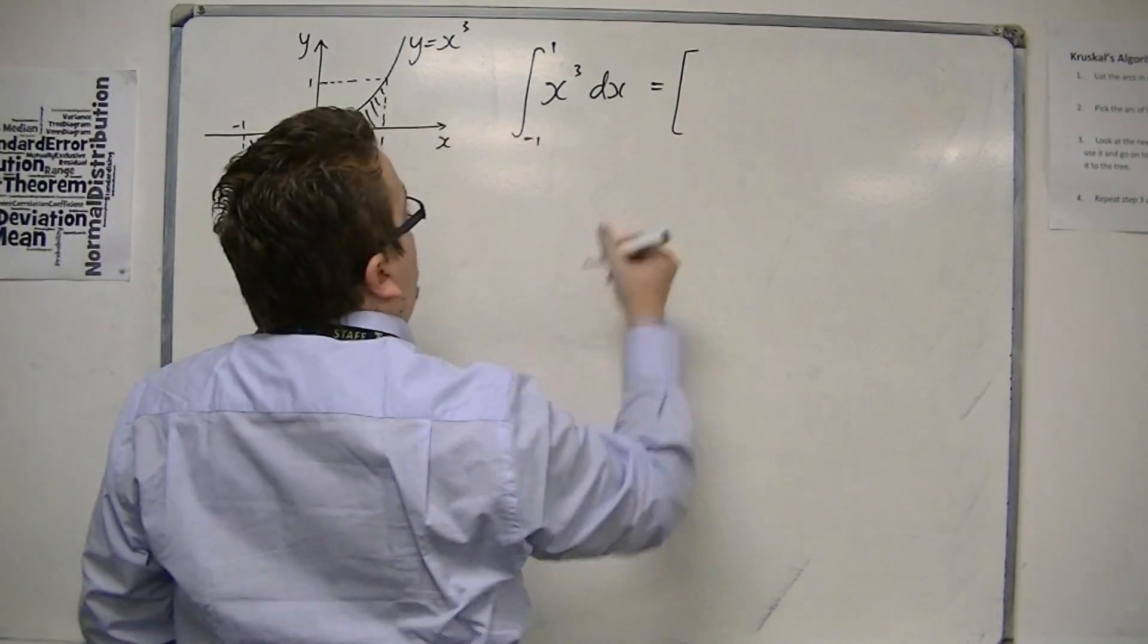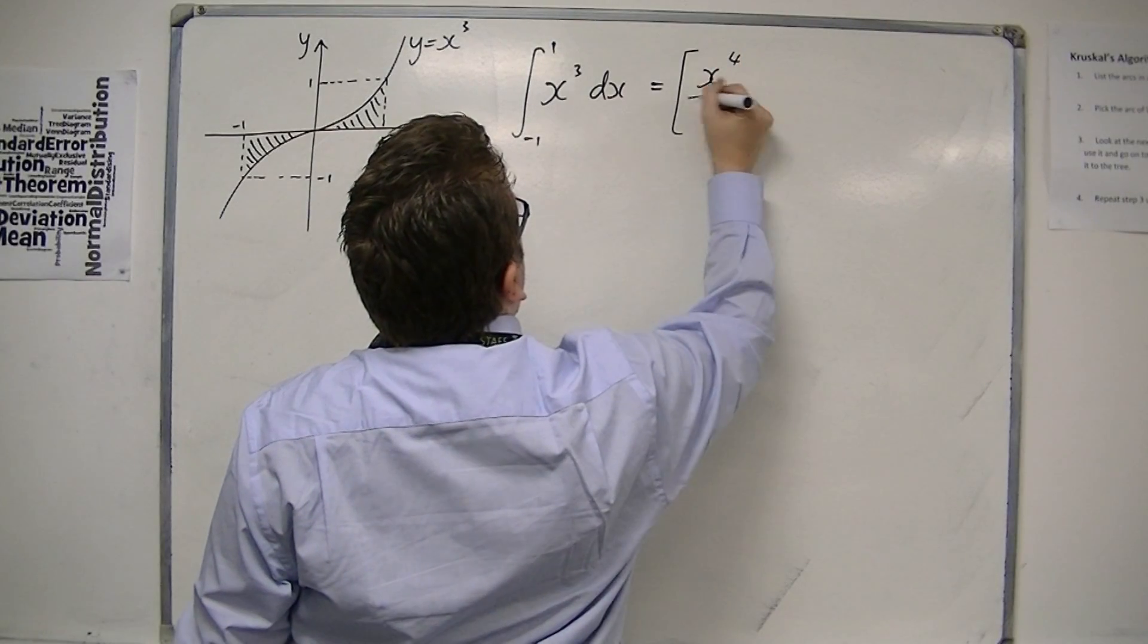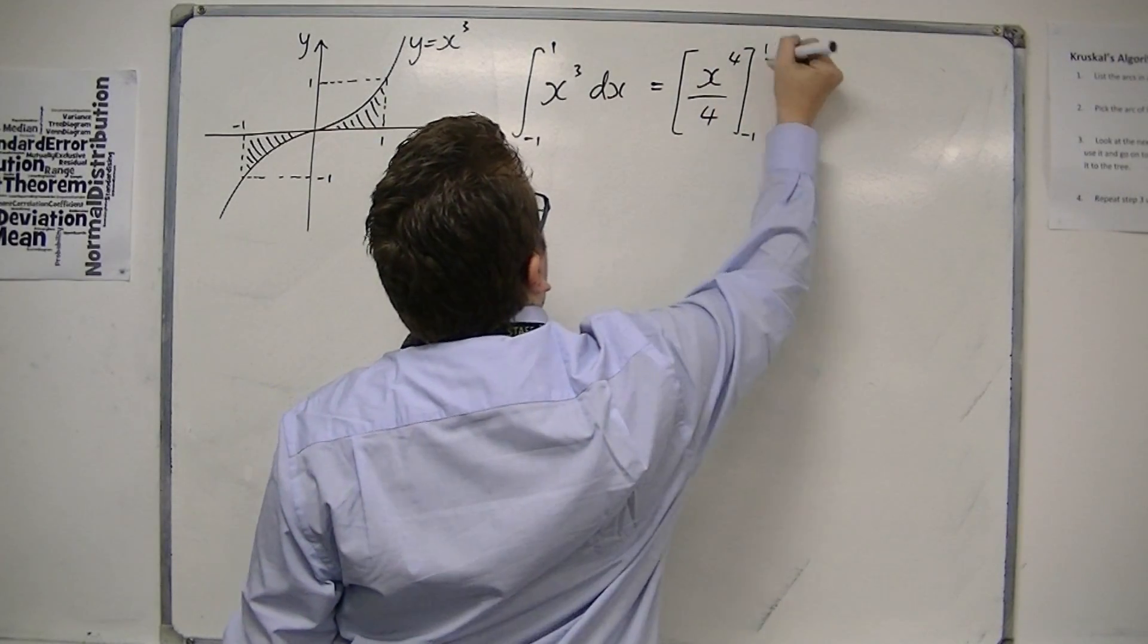So I introduce the square brackets, add 1 to the power, divide by the new power, integrating between minus 1 and 1.